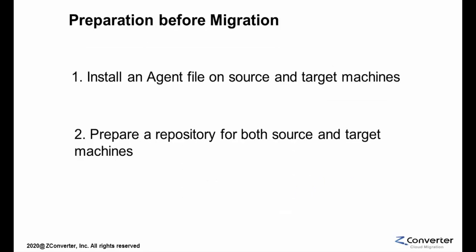To prepare for the migration, you must first install an agent file on the source and target machines. Second, you must prepare a repository for both source and target machines. In this demo, we are using a very basic repository option, which means we are just adding an additional disk for both the source and target repositories. For a large number of workloads, you need to prepare a central repository connected to the network, such as a network attached storage, or NAS. For more details, please refer to the how-to-create-a-repository video demo from ZConverter.